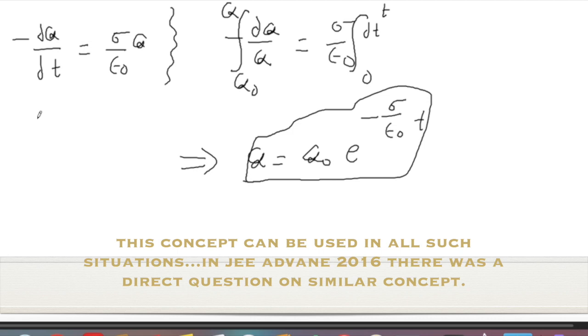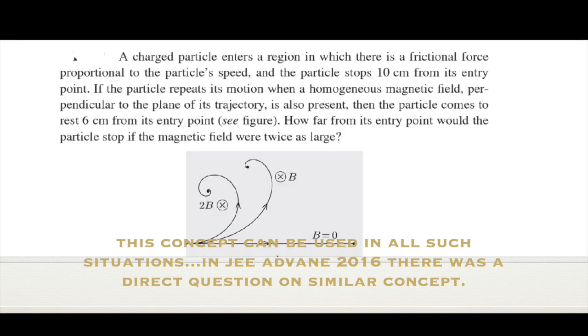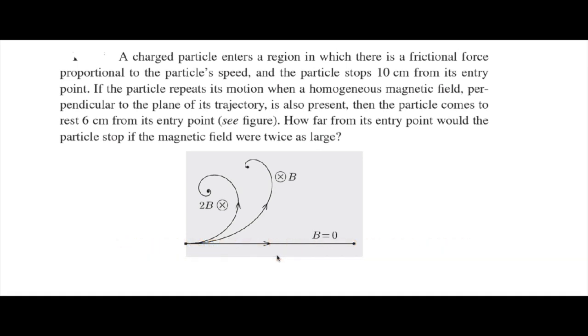Okay, so we are going to discuss the next problem now, problem number 13, which is a problem from magnetic intensity. A charged particle enters the region in which there is a frictional force proportional to the particle's speed. Obviously, if it is frictional force, then it must act in the opposite direction of velocity, so we can say that the frictional force F vector must be equal to minus K times V vector, where K is a positive constant.